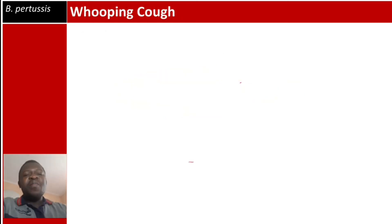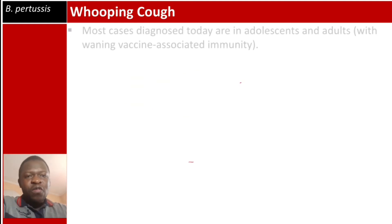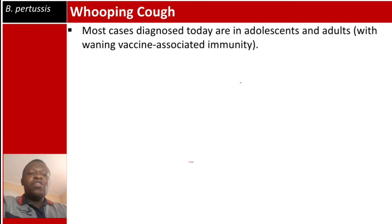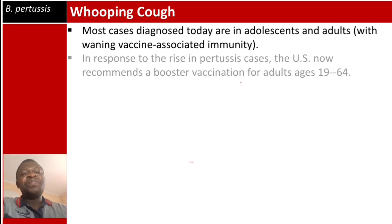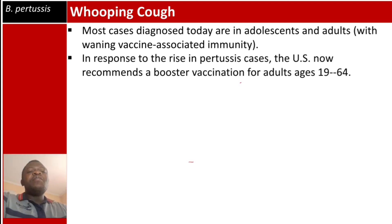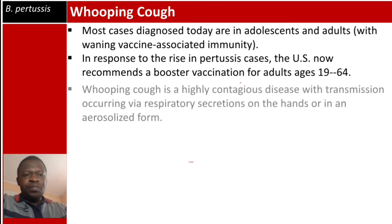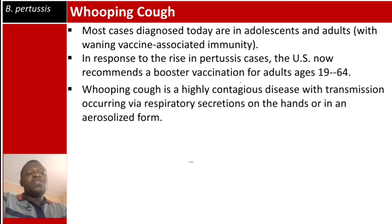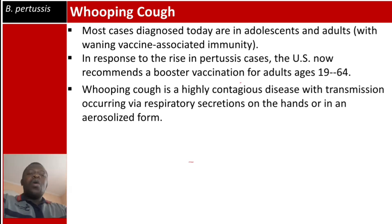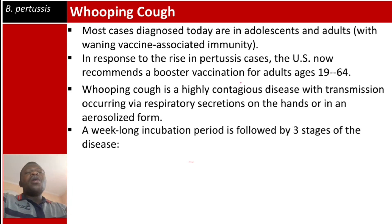Most cases of whooping cough diagnosed today are in adolescents and adults with waning vaccine-associated immunity. In response to the rise in pertussis cases, the US now recommends a booster vaccination for adults aged 19 to 64 years. Whooping cough is highly contagious, with transmission occurring via respiratory secretions on the hands or in aerosolized form, with approximately a one-week incubation period.